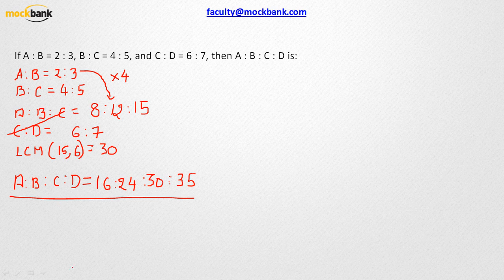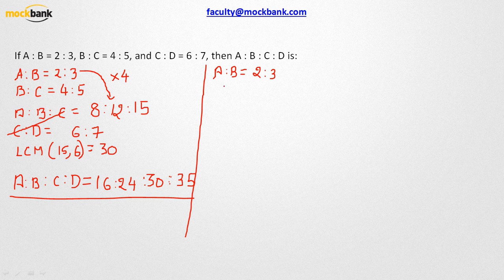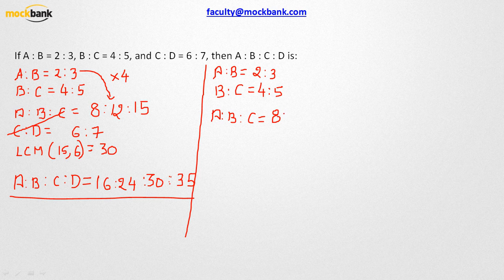Now let us find this in the most efficient manner. Given a:b = 2:3 and b:c = 4:5, we need to find a:b:c in the shortest possible way. A is the multiplication of the two left extremes: 2×4 = 8. B is the product of the inner terms: 3×4 = 12. C is the multiplication of the two right extremes: 5×3 = 15. So a:b:c = 8:12:15.